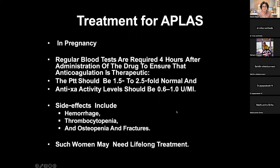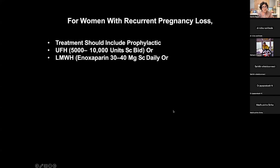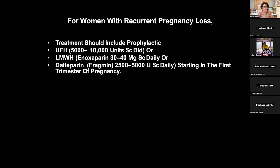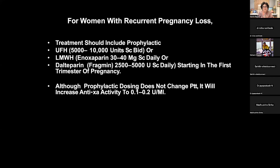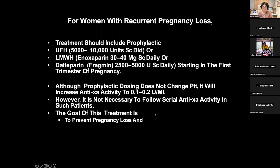Such women may need lifelong treatment. For women with recurrent pregnancy loss, treatment should include prophylactic unfractionated heparin 5,000 to 10,000 units twice daily, or low molecular weight heparin such as enoxaparin 30 to 40 mg subcutaneously daily, or dalteparin/fragmin 2,500 to 5,000 units subcutaneously starting in the first trimester. Prophylactic dosing does not change PTT but will increase anti-Xa activity to 0.1 to 0.2 units. Serial anti-Xa monitoring is not routinely necessary.